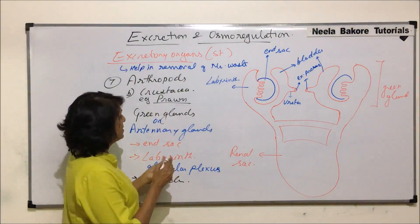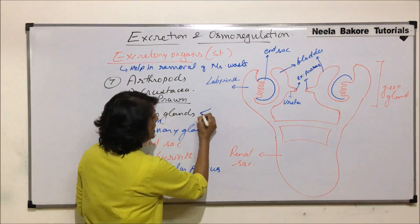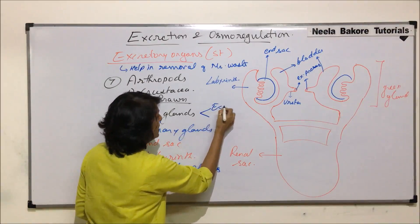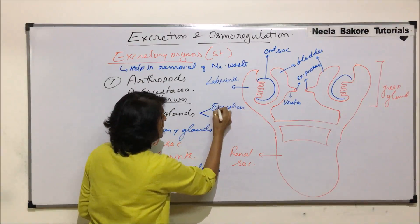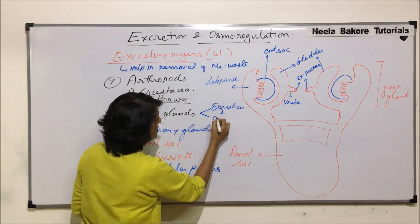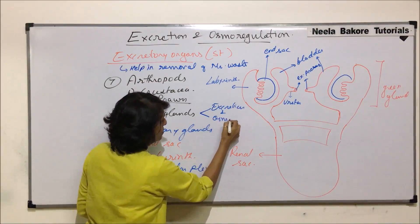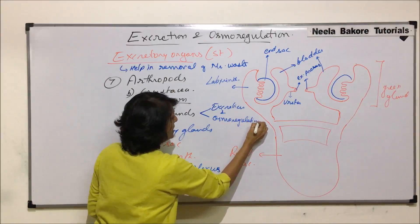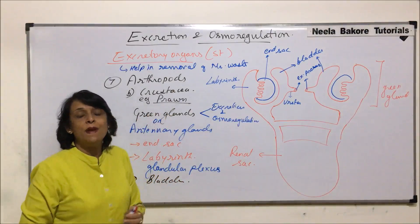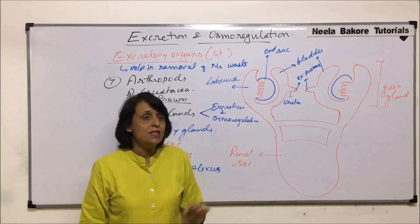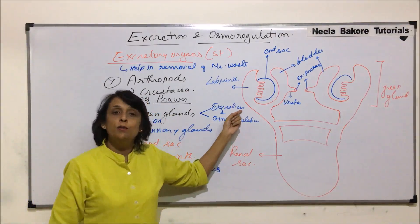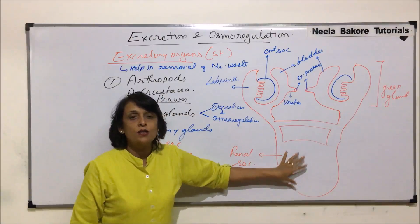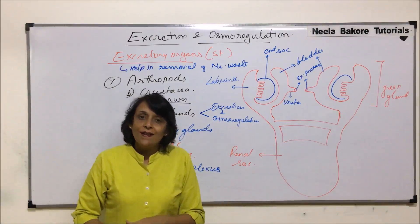The function of green glands is excretion as well as osmoregulation. That means they help in maintaining water and ion balance, in addition to removal of waste material. So this is the basic structure of the green gland.